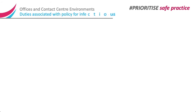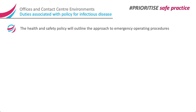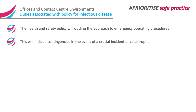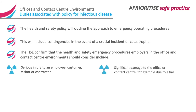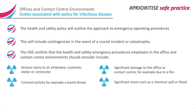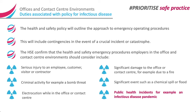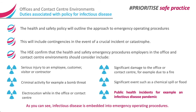Duties associated with policy for infectious disease. The health and safety policy will outline the approach to emergency operating procedures. This will include contingencies in the event of a crucial incident or catastrophe. The HSE confirms that the health and safety emergency procedures employers in the office and contact centre environments should consider include: serious injury to an employee, customer, visitor, or contractor; significant damage to the office or contact centre, for example due to a fire; criminal activity, for example a bomb threat; significant events such as a chemical spill or flood; electrocution while in the office or contact centre; public health incidents, for example an infectious disease pandemic. As you can see, infectious disease is embedded into emergency operating procedures.